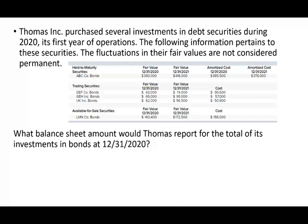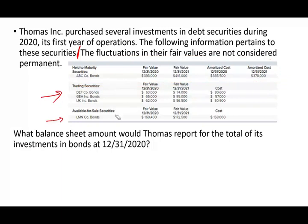So let's take a look at this question. Thomas purchased several investments in debt securities during 2020, in its first year of operation. The following information pertains to these securities. I can give you different exhibits — one for held-to-maturities, one for trading, and one for available for sale — or show you market values from Yahoo Finance rather than giving you the information clean cut. The fluctuation in fair value is not considered permanent, meaning there is no permanent impairment loss. What balance sheet amount should Thomas report for the total of its investment in bonds at 12-31-2020?